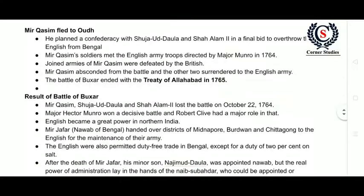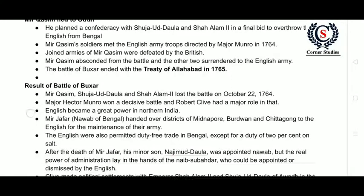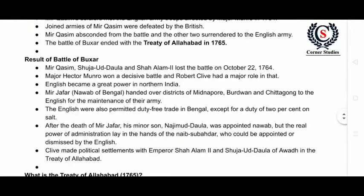Because of this war, Mir Qasim had to face damages. He was removed from his position, and his minor son, Najimut Dala, was appointed as Nawab. Since he was a minor and did not understand administration, British people took advantage of this.